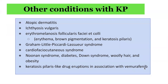There are a number of other conditions associated with keratosis pilaris. These include atopic dermatitis, ichthyosis vulgaris, and erythromelanosis follicularis fasciae et colli, which comprises erythema, brown pigmentation, and keratosis pilaris.